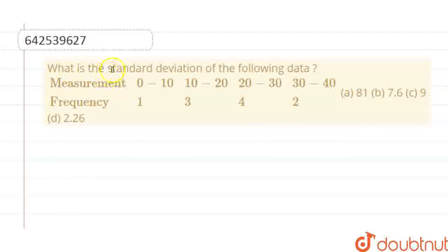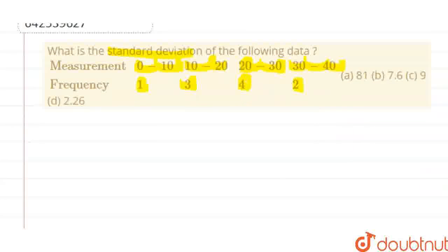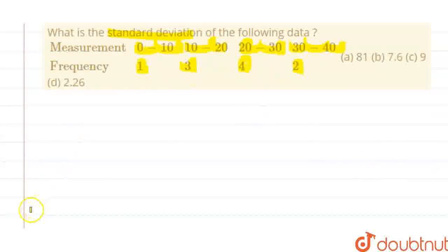The question is, what is the standard deviation of the following data? We are given measurements 0 to 10, 10 to 20, 20 to 30, 30 to 40, and frequency 1, 3, 4, 2. Now, first, let us make the table of this data.